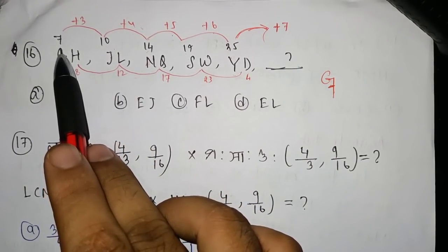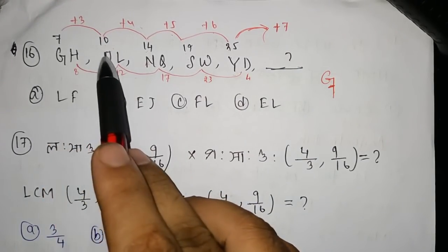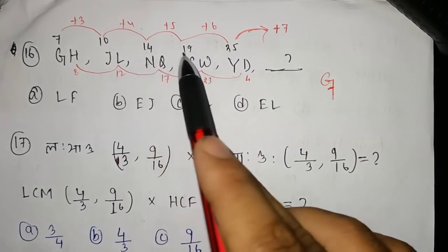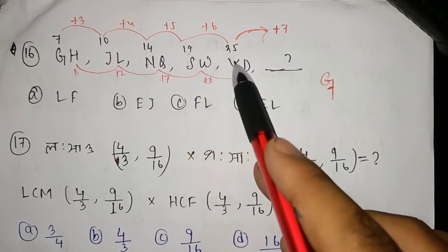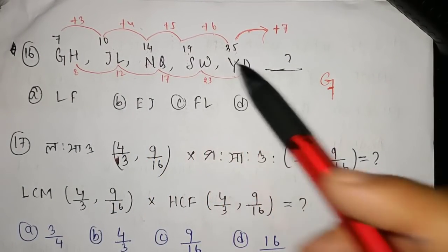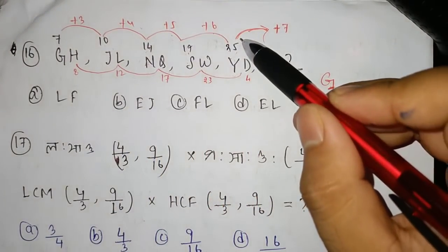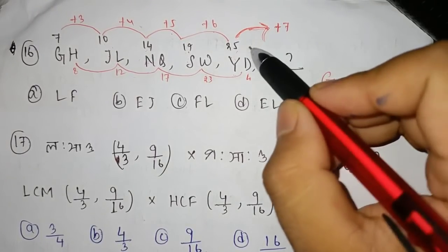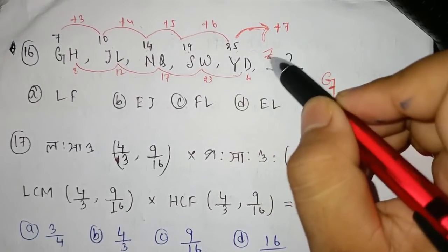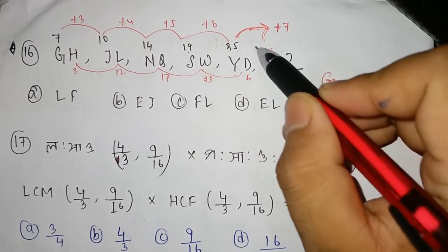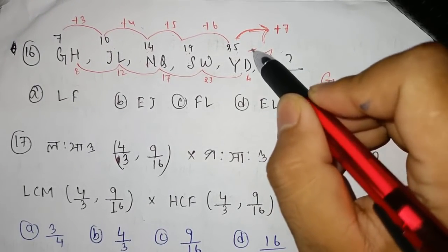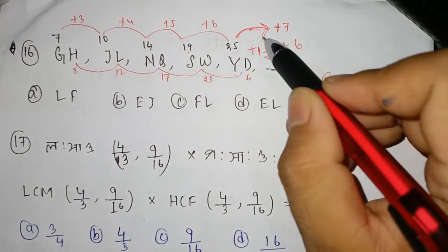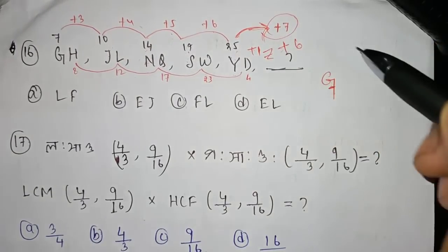So G is 7, J is 10, N is 14, S is 19, and Y is 25. Then J plus J plus J plus 1 — add 1, add 1, add 1, add 2.